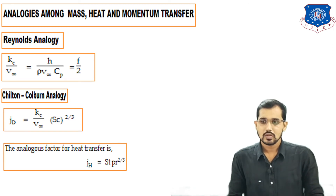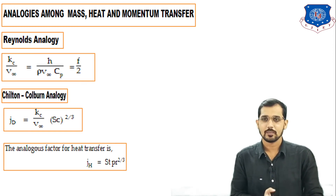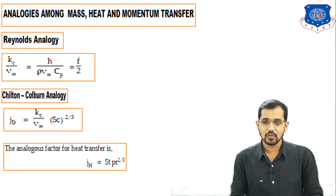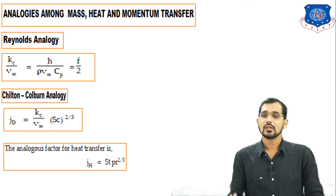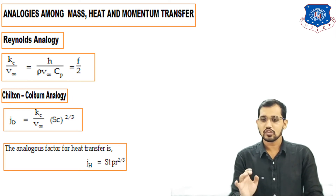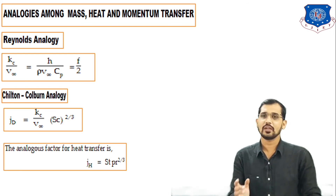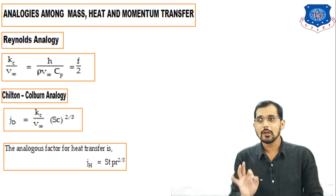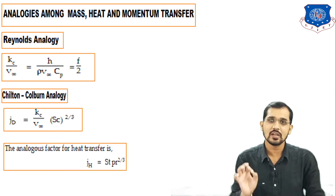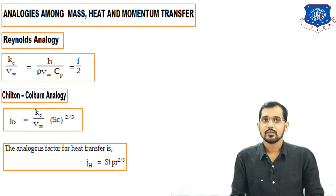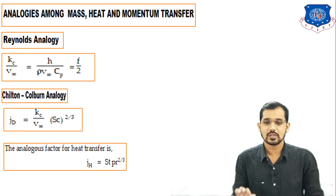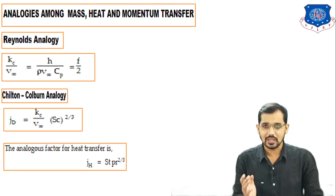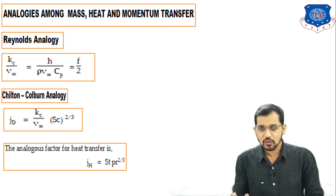The second is the Chilton-Colburn analogy, which gives the J factor. The Jd factor for mass transfer is: Jd = (Kc/V∞)·Sc^(2/3). The analogous J factor for heat transfer from the Chilton-Colburn analogy is: Jh = St·Pr^(2/3), where St is the Stanton number and Pr is the Prandtl number. Jd is the J factor for mass transfer and Jh is the J factor for heat transfer.